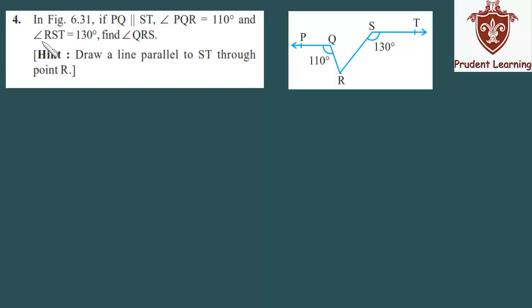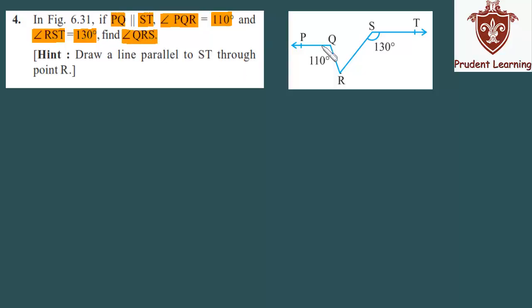Let us see the fourth question of the exercise. In figure 6.31, if PQ is parallel to ST, angle PQR is 110 degrees, and angle RST is 130 degrees. With this information, we need to find angle QRS — this angle here.